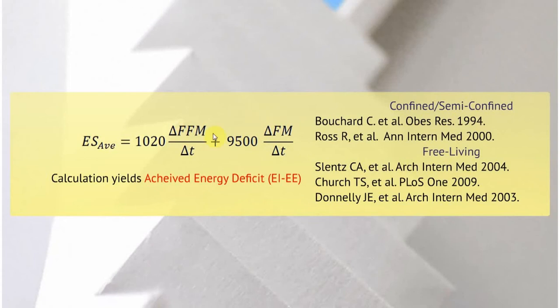But exercise intervention after exercise intervention shows that people lose modest amounts of weight or hardly anything at all. So why? I took data from different studies. I can have the change in fat-free mass over the change in time. This is what we call a difference quotient. Change in fat mass over change in time, and that should give me the average change in body energy stores.